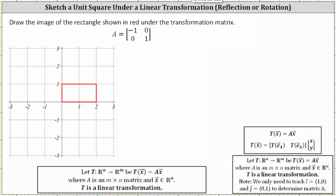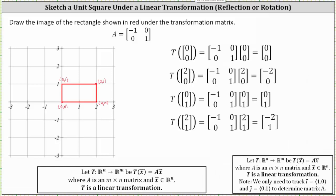We're asked to draw the image of the rectangle shown in red under the transformation matrix A. There are two methods for doing this. One method would be to find the ordered pairs for the four vertices, which I've done here.